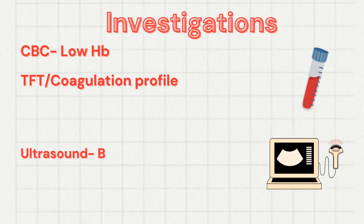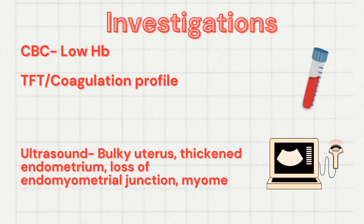Let us now go through the investigations done to rule out adenomyosis. Laboratory investigations are similar to those done to evaluate abnormal uterine bleeding, including a complete blood count (which may show low hemoglobin), thyroid function test, and coagulation profile to rule out bleeding disorders — though a baseline CBC is always recommended. Ultrasonography findings typically seen in adenomyosis include bulky uterus, thickened endometrium, loss of the endomyometrial junction, and myometrial cysts.